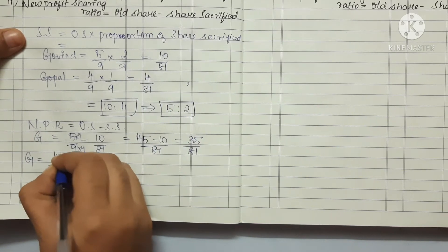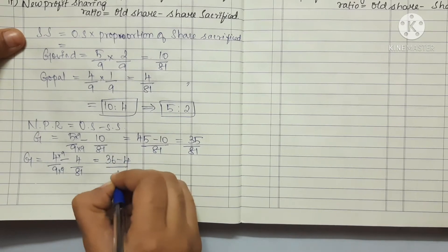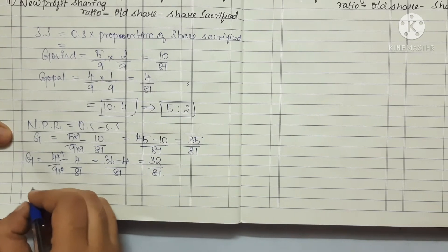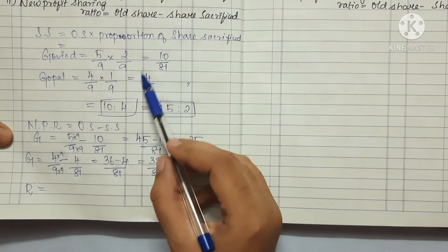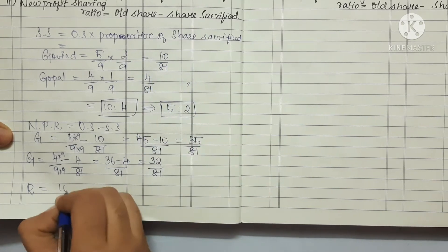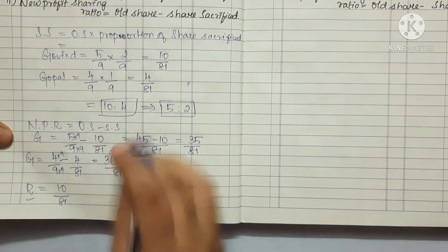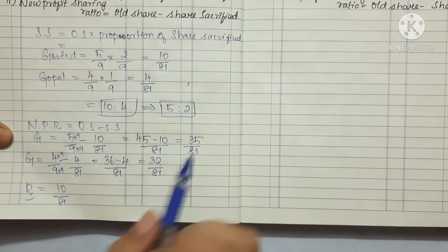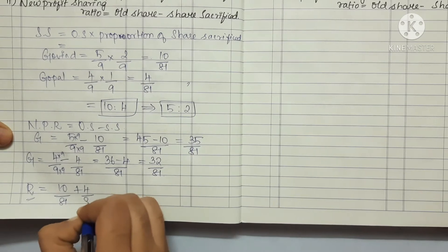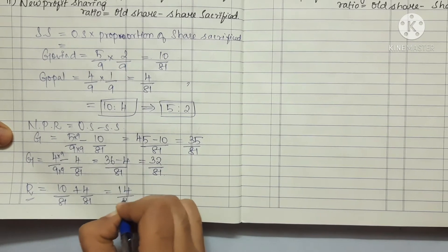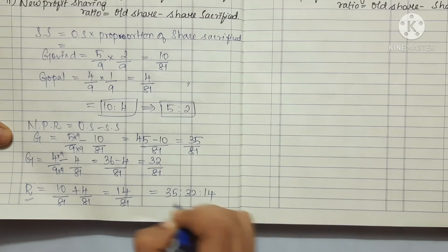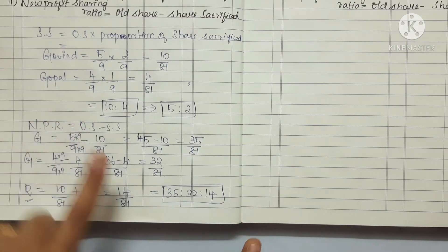We add the new partners to the old partners in the formula. For Gopal: adding 4 by 81, the answer is 32 by 81. So the new profit sharing ratio is 35 is to 32 is to 14. The sacrificing ratio adds up to give the new profit sharing ratio.